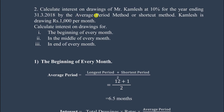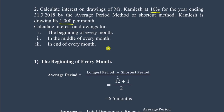Calculate the interest on drawings of Mr. Kamilish at 10 percent for the year ending 31st March 2018 by the average period method, also called the shortcut method. Kamilish is drawing 1,000 rupees. We have 10 percent rate, the amount, and we will use the average period method. We need to calculate for the beginning of every month, the middle of every month, and the end of every month.